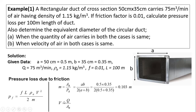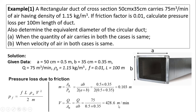Now we calculate the velocity of air flowing through the rectangular duct. Velocity v = volume flow rate Q divided by cross-sectional area a × b. Q = 75 m³/min and area = a × b. By putting the values we get velocity = 428.6 m/min. Since Q is in m³/min, velocity is in m/min. Dividing by 60 gives velocity = 7.143 m/s.